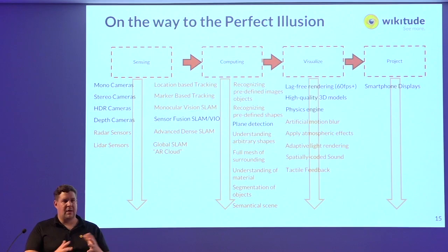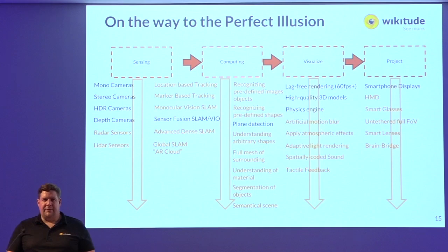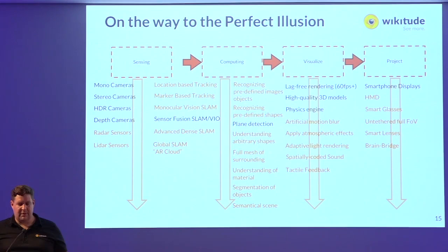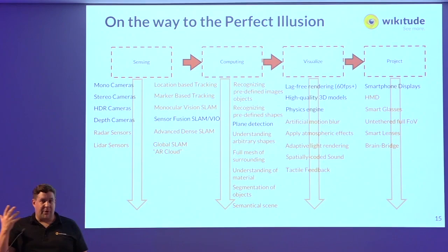For the projection component, it's a bit more obvious where we're going: HMDs, smart glasses, full field-of-view glasses. We might end up with smart lenses that we insert in our eyes and get digital information projected directly, or something like a brain bridge that injects information directly into our brain — though again, this is pure speculation.